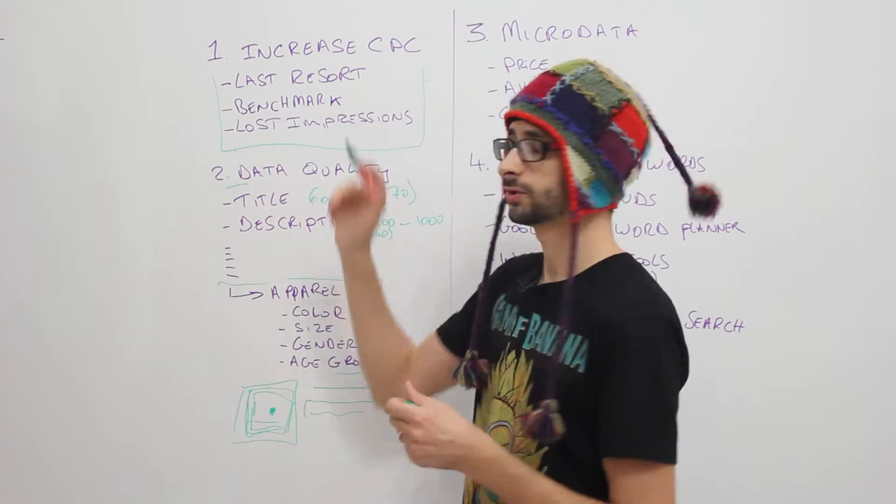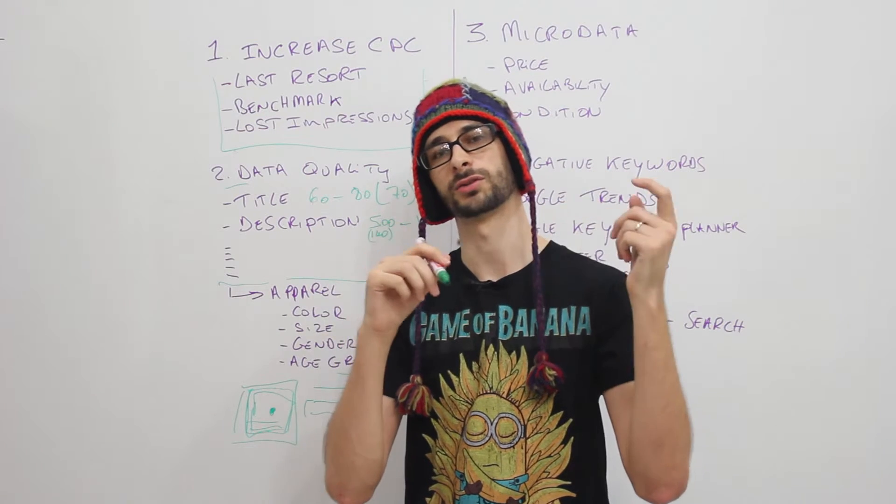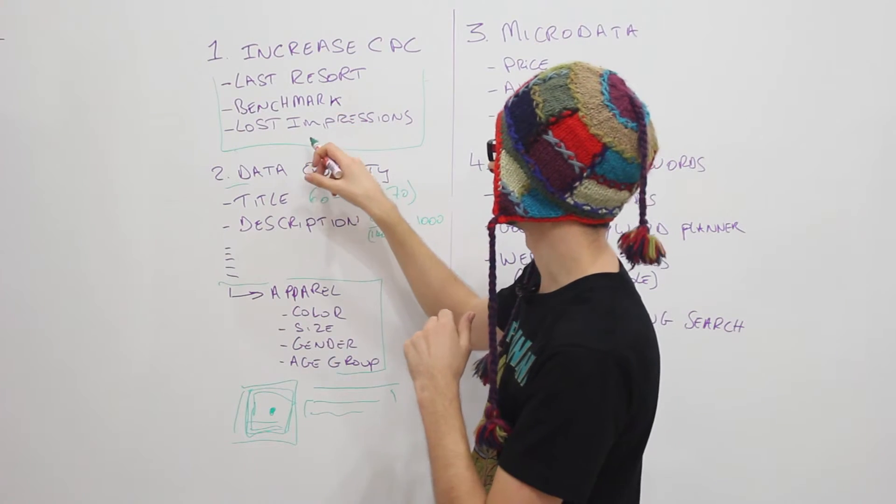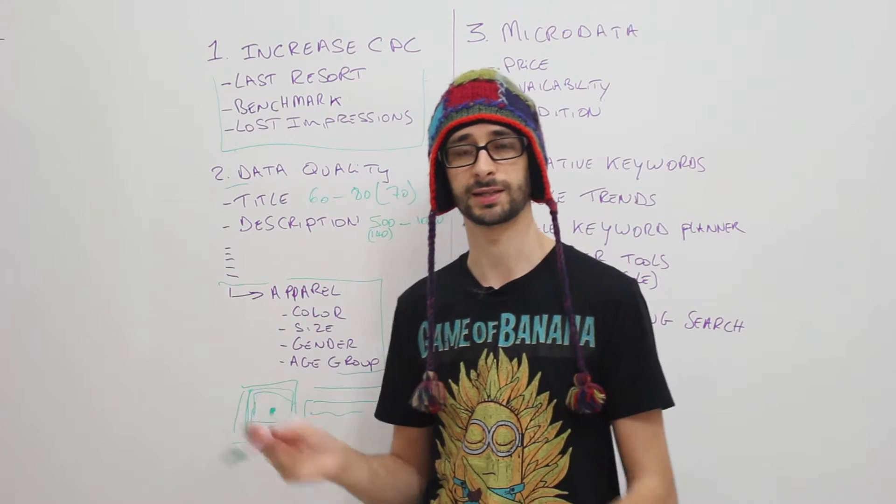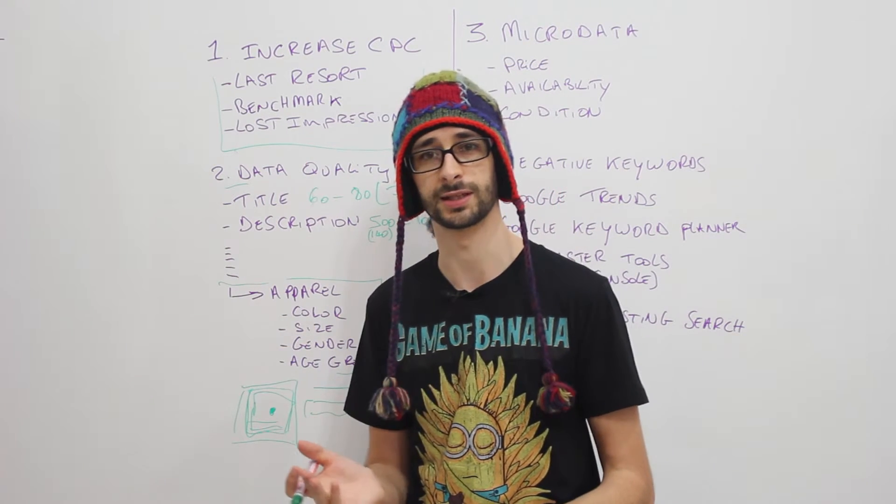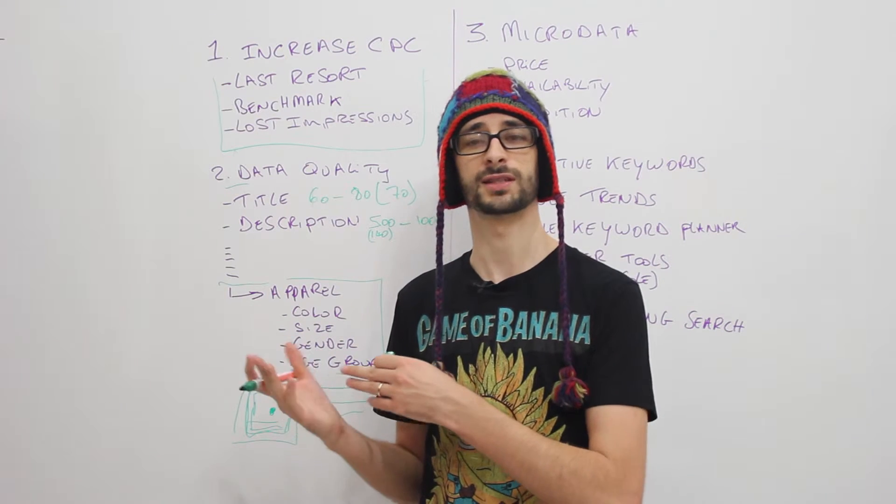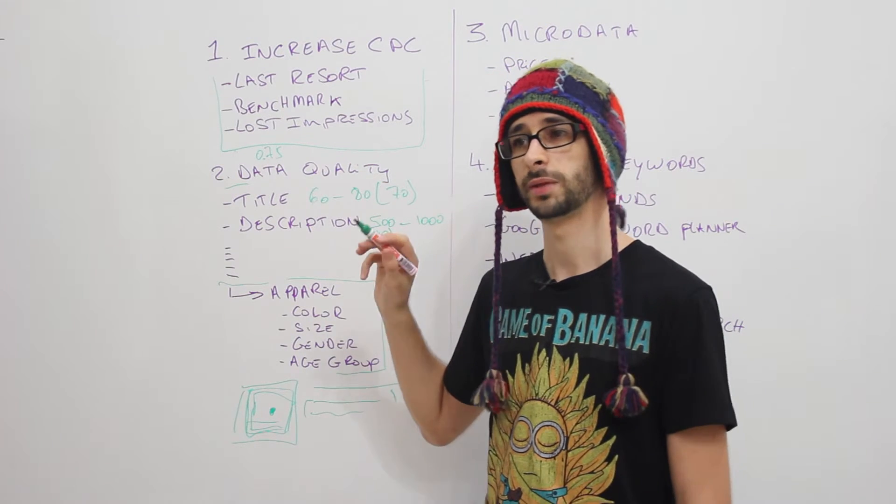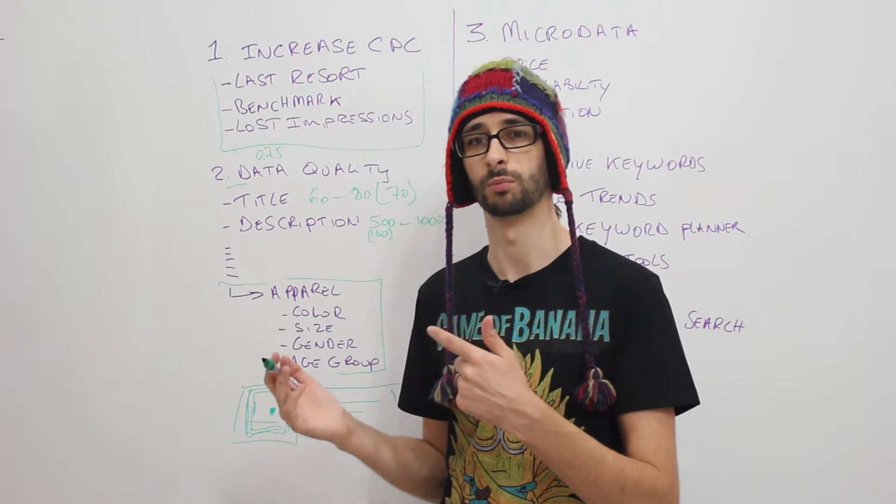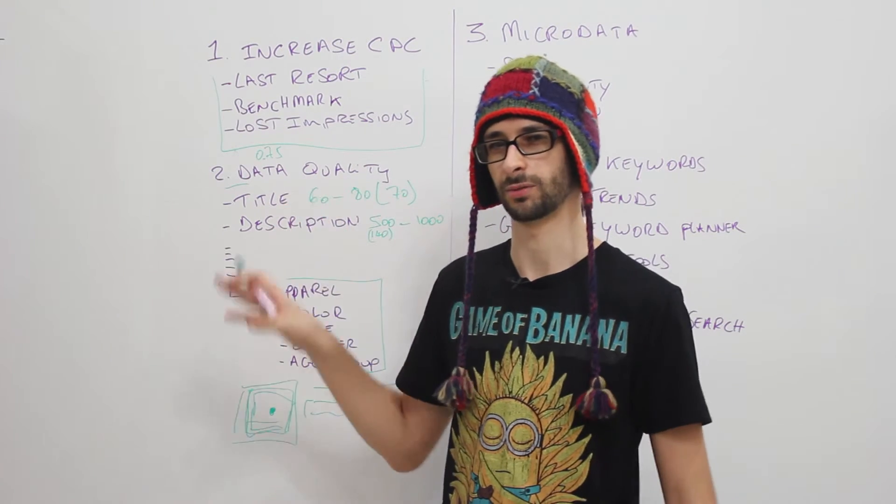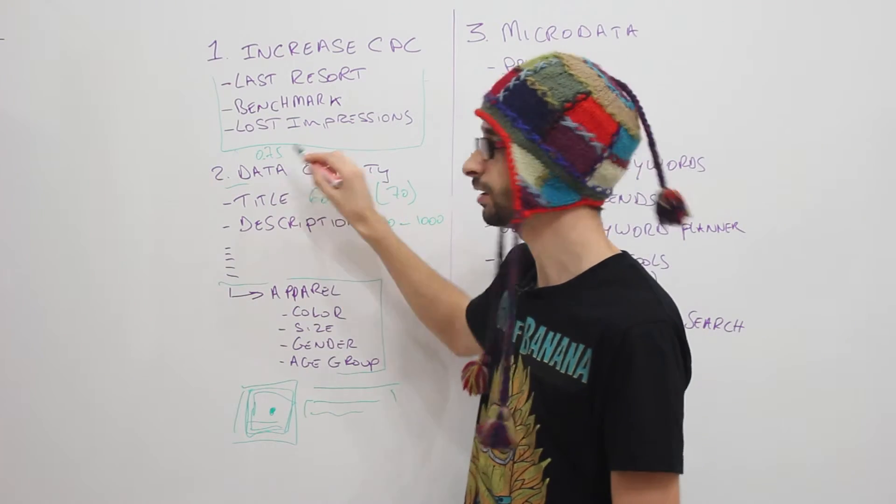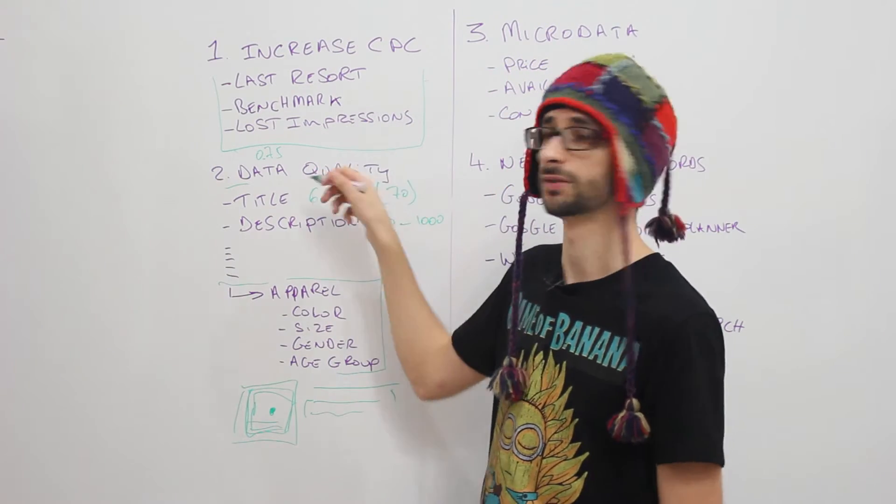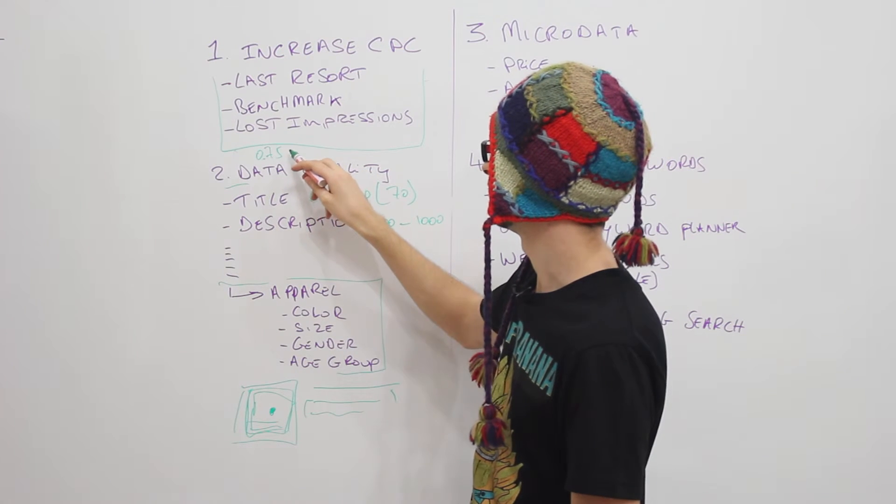If for example the benchmark, so if you click on columns you can add benchmark and also lost impression search, then you can focus on increasing the CPC. So if you have a lost impression rate of for example 50% and the benchmark is $1 CPC and you currently have 50 cents, increase it to 0.75 cents, which means that most likely you gain 25% more search results. But I'm not really sure that that's really accurate, so don't go by what I'm saying. But increasing the CPC will give you more impressions, but it will be a better result when you have done everything else and then do this.